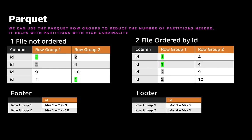We can use parquet row groups to reduce the number of partitions needed. It helps with high cardinality partitions. We recommend writing the files ordered by the column you are going to use in the WHERE clause. For example, here we have a file that is not ordered — so in both row groups we have the value 1 and the value 2 spread across them. In the footer, the min value for row group 1 is 1 and the max is 9, and for row group 2 the min is 1 and the max is 10. So if you run a query with WHERE ID equals 1, we need to read and decompress both row groups. And if the WHERE clause is ID equals 3, which doesn't exist in this file, we still need to decompress both row groups because of the min and max values in the footer.